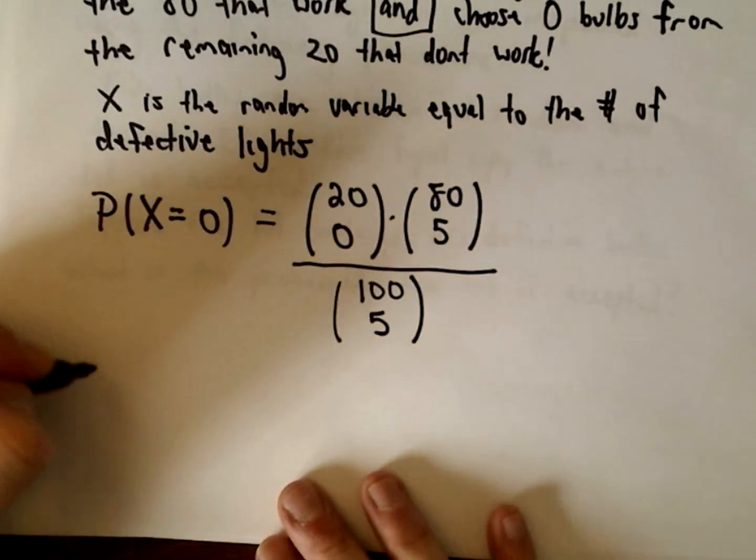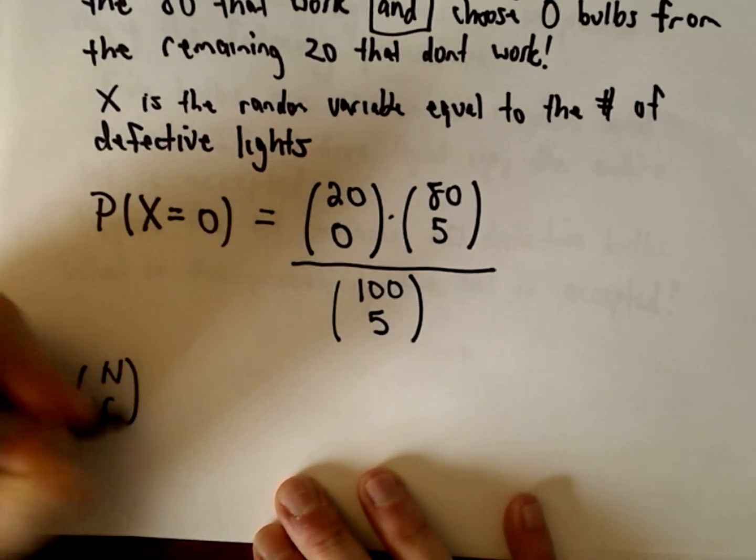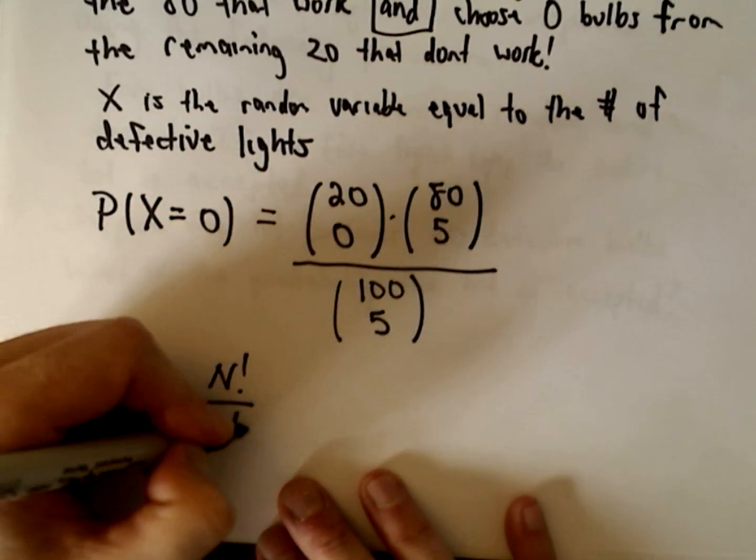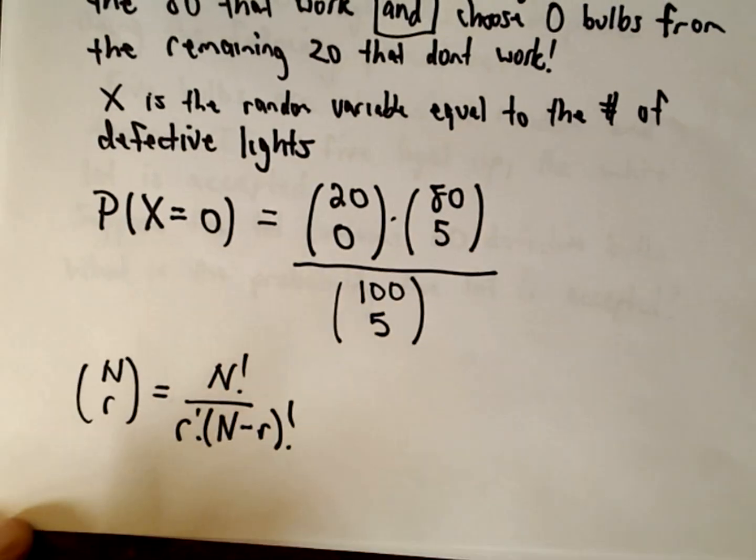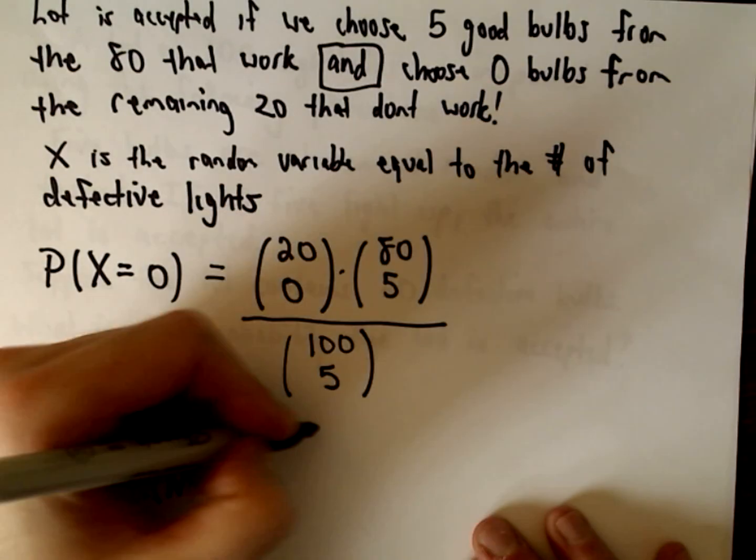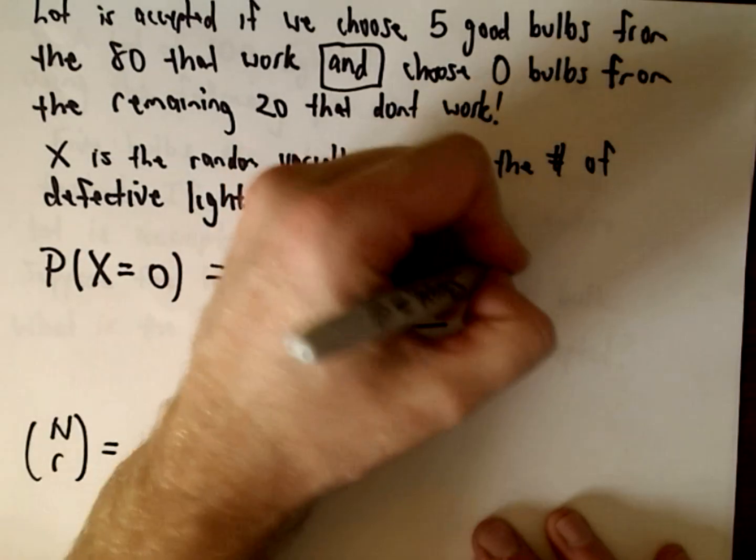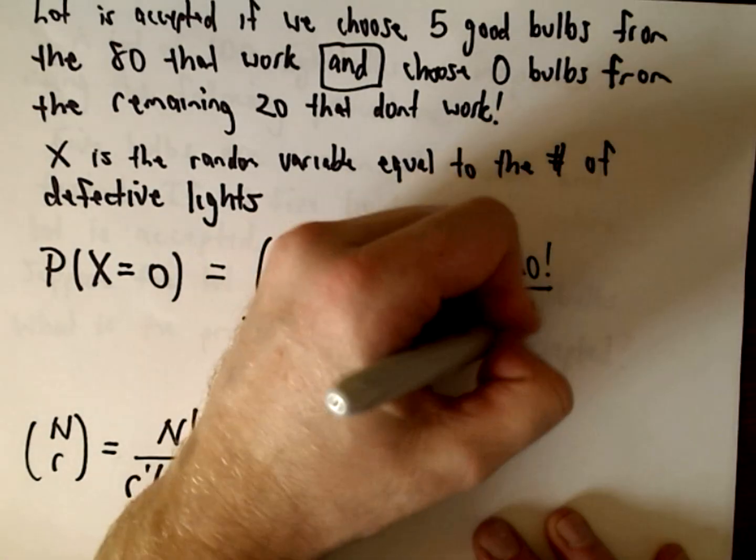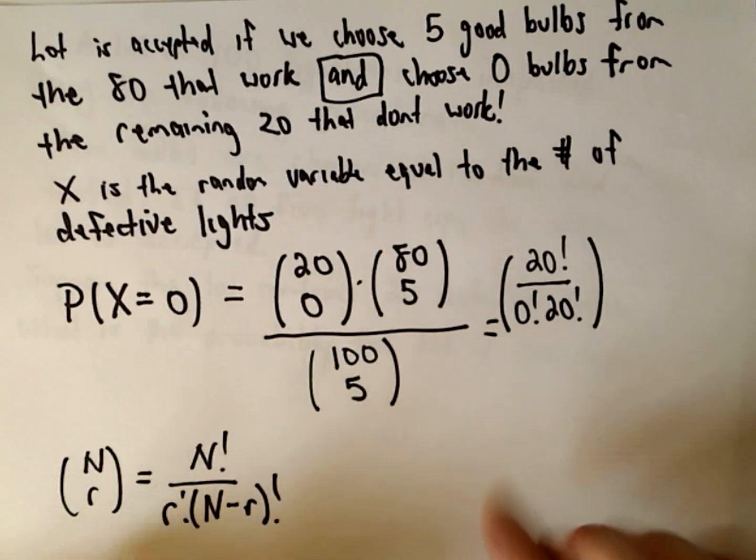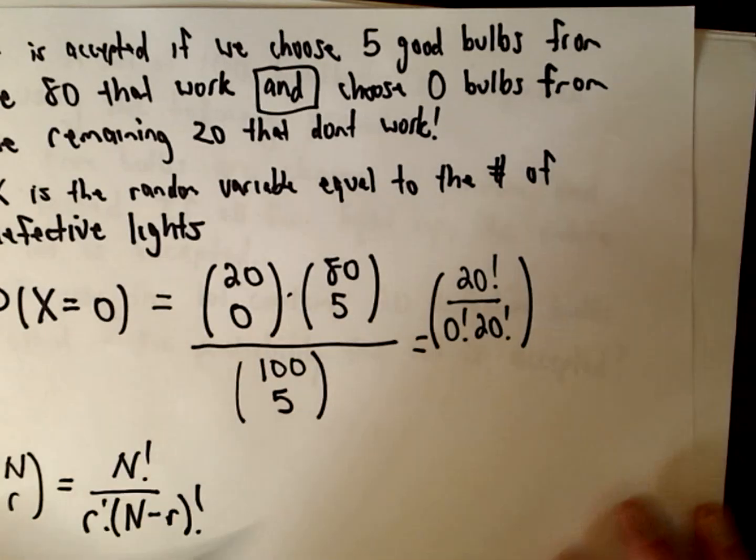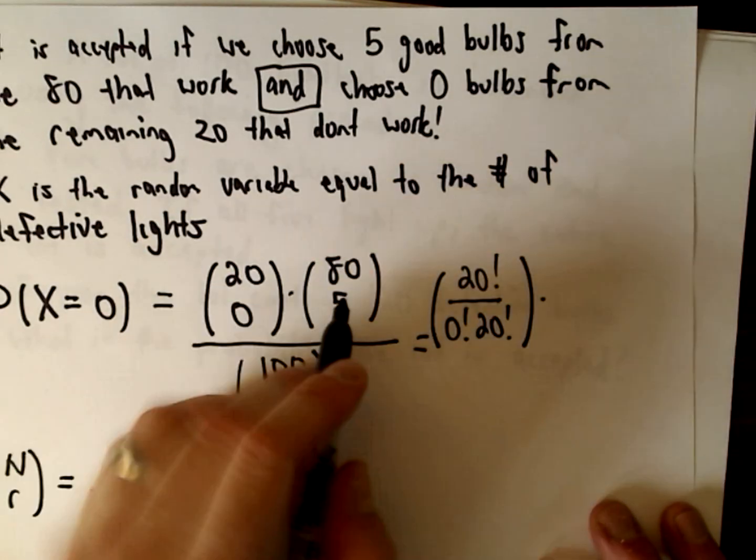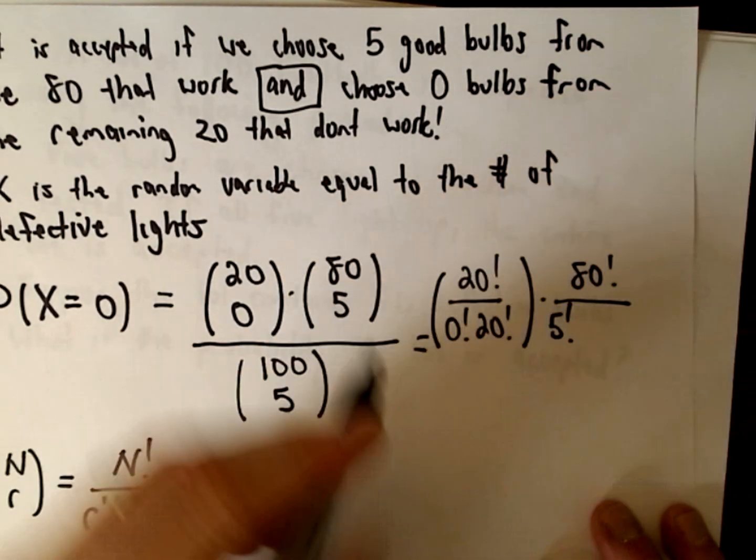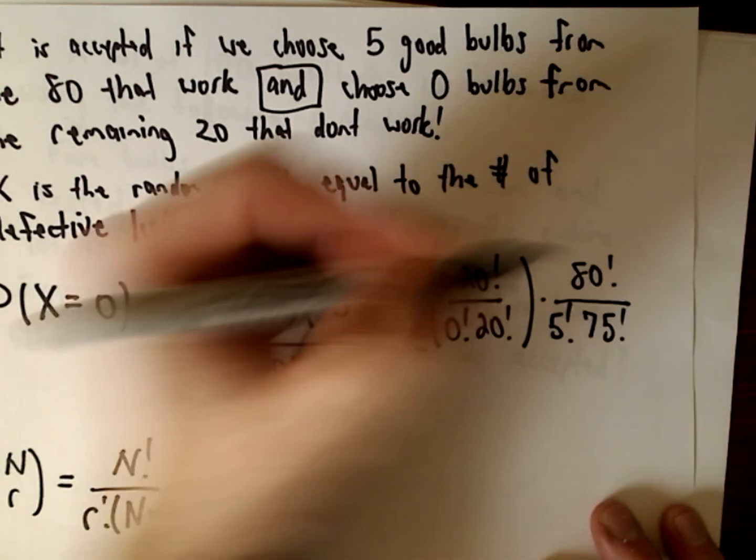Remember to calculate this stuff, in case you've forgotten, n choose r is n factorial over r factorial times capital N minus r factorial. Again, you don't really want to do this by hand. I'll write it out just for fun. So 20 choose 0 is 20 factorial over 0 factorial times 20 factorial. Recall that 0 factorial is 1, not zero. Then we've got 80 choose 5, that's 80 factorial over 5 factorial times 75 factorial.